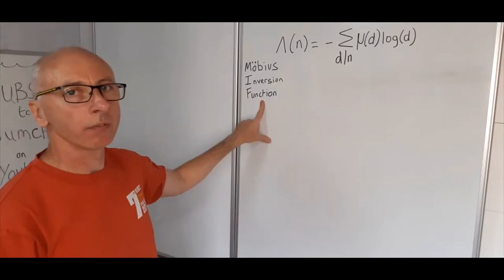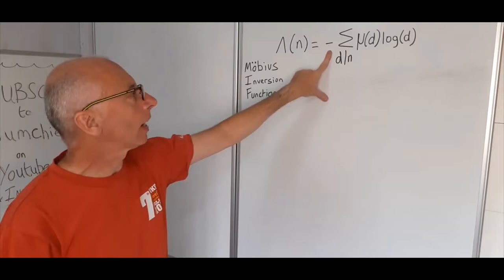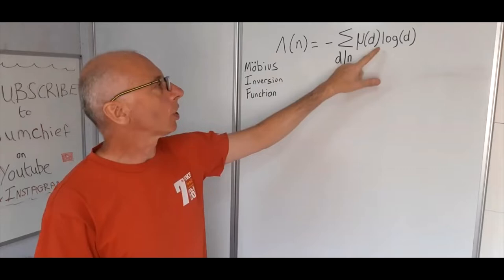We're going to look at the Möbius inversion function today. The Möbius inversion function tells us that the Von Mangoldt function for any integer n is equal to the negative value of the sum over the divisors of n, where we take the Möbius function of that divisor times the log of that divisor.